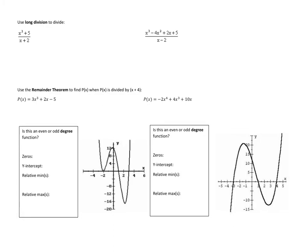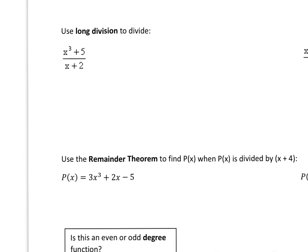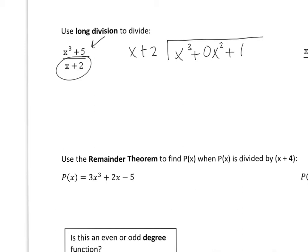You'll also need to be comfortable doing long division. So for long division, I write my divisor x plus 2, and then my dividend goes inside: x cubed — I don't have an x squared term but I need to hold it in place, so I write plus 0x squared plus 0x plus 5. I look at how many times x goes into x cubed, so I multiply x by x squared and put it above the quadratic term. Then I multiply x squared by x and by 2, and write x cubed plus 2x squared underneath the x cubed term.